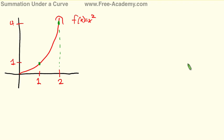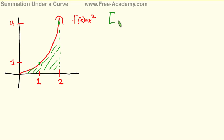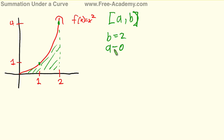Hello, and in this lecture presented by www.free-academy.com, we're going to be finding the summation of the area under the curve. The question we're asking is: what is the area underneath a given curve between two points? I'm going to set up these points to be A and B, where B equals two and A equals zero. So that'll give us the area between zero and two underneath f of x.